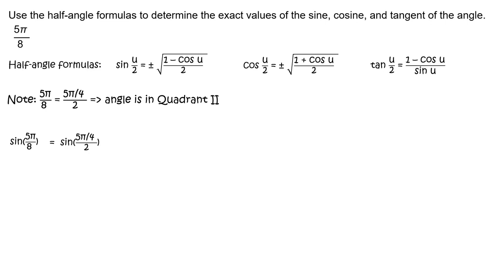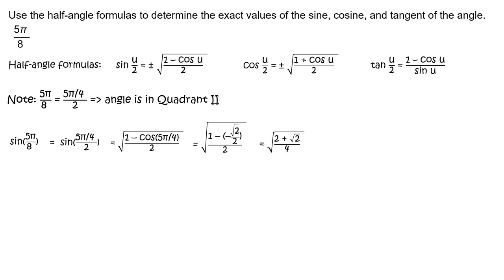To find sine of 5π/8, write sine of 5π/8 equals sine of (5π/4) divided by 2. Use the half-angle formula and substitute 5π/4 for u to get the square root of the quantity (1 minus cosine of 5π/4) divided by 2. Recall that cosine of 5π/4 equals negative √2/2. Substituting and simplifying gives the square root of the quantity (2 plus √2) divided by 2.